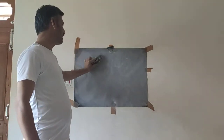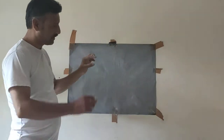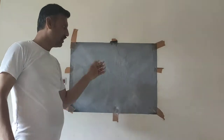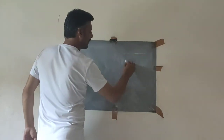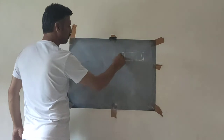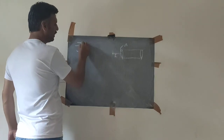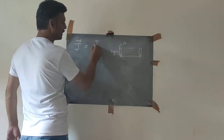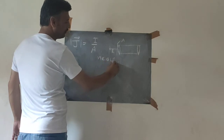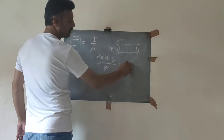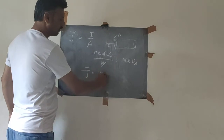Another important quantity is current density. Since the current passed through an area depends on the area of cross-section, if we divide the total current by the area of cross-section we get current density. Current density J = I/A. It is a vector quantity. Substituting I = NEAVd, we get J = NEVd. So current density J equals NEVd.